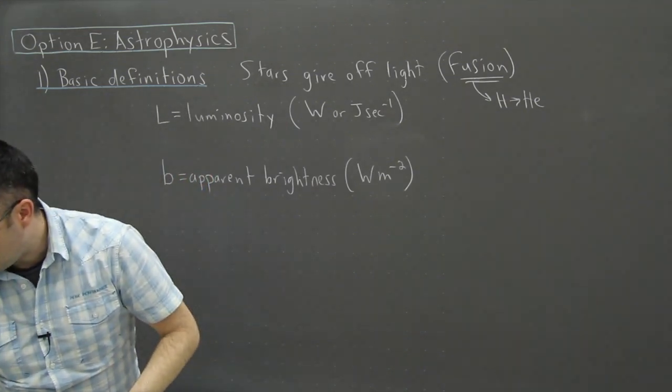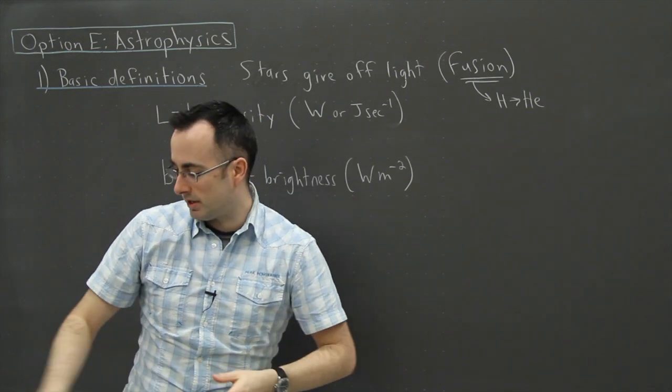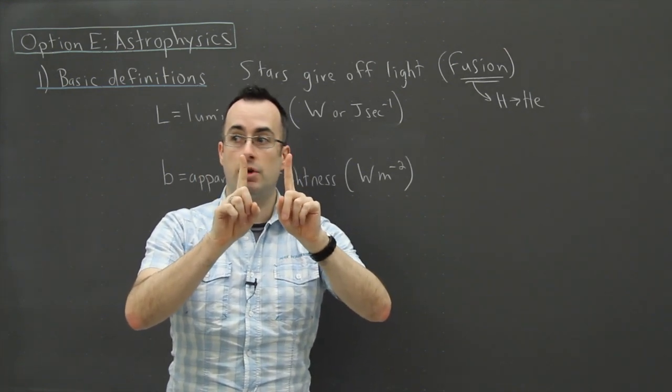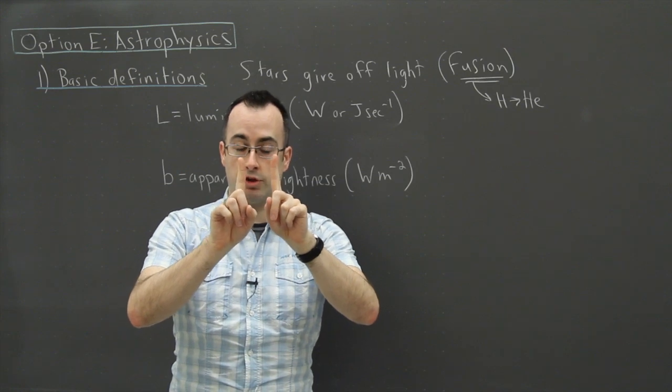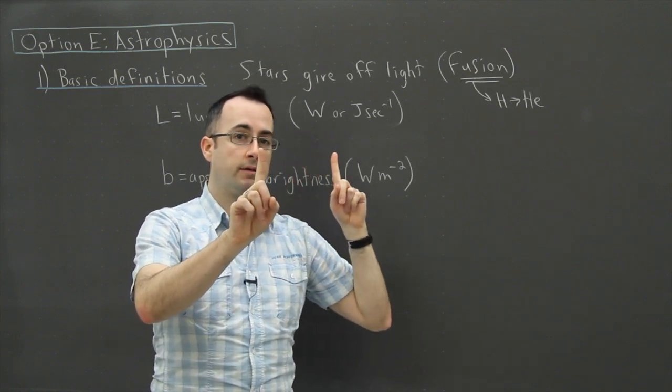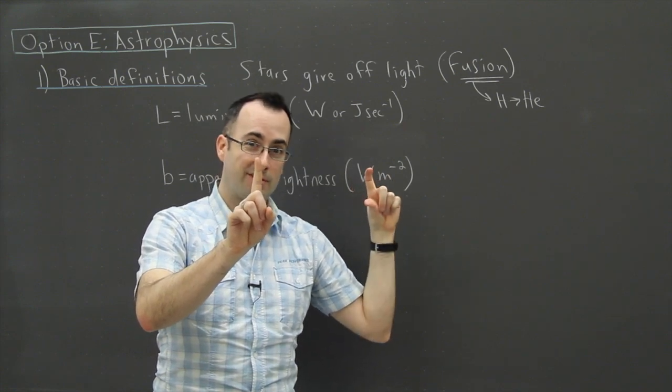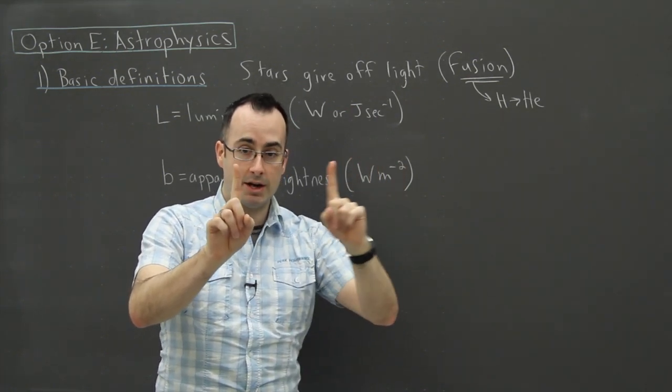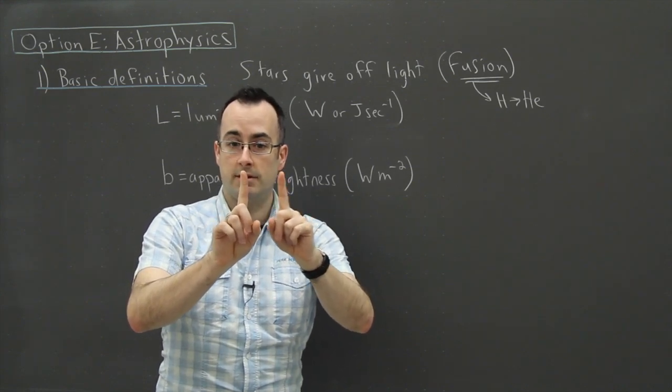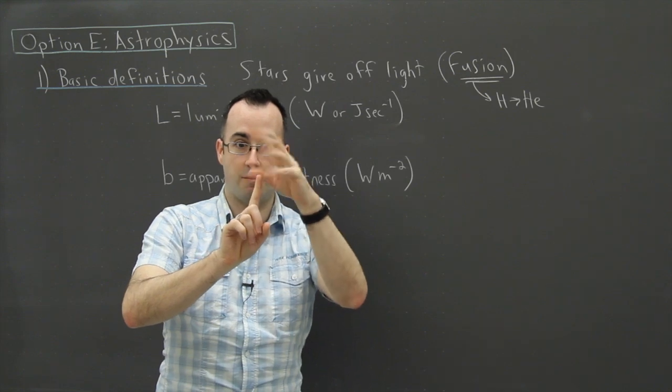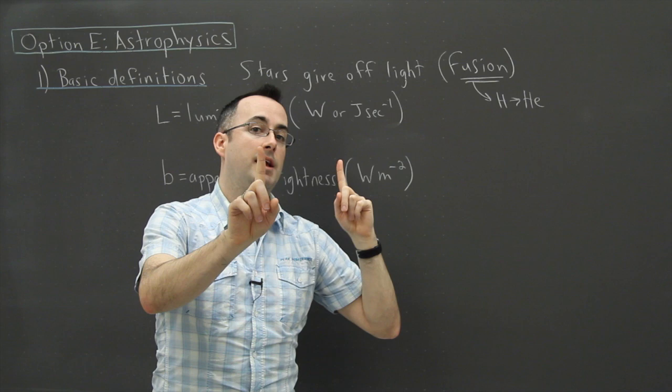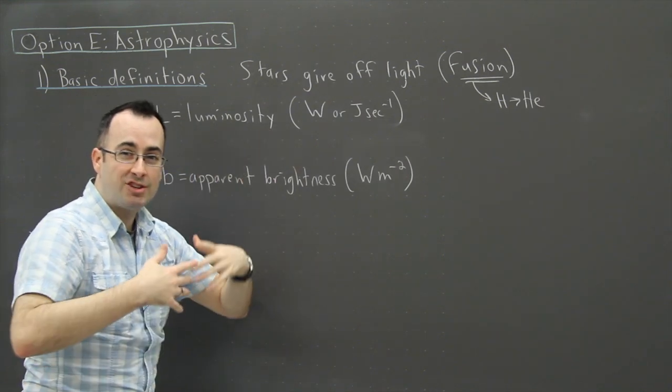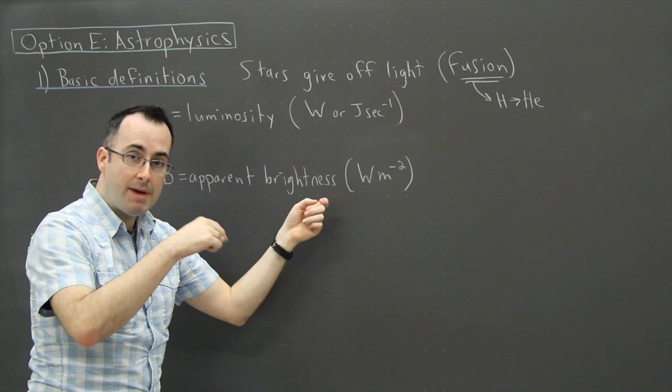We have this notion called a standard candle. Imagine two candles that are the same luminosity - they put out the same amount of light. If I take one and put it a lot farther away, this one's going to look dimmer, right? If I put it a hundred meters away, it's going to appear a lot dimmer even though it's actually the same brightness as this one. Luminosity is the intrinsic brightness, but as I have more distance it's going to appear dimmer.